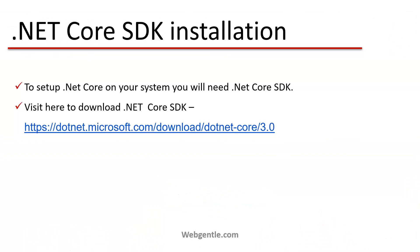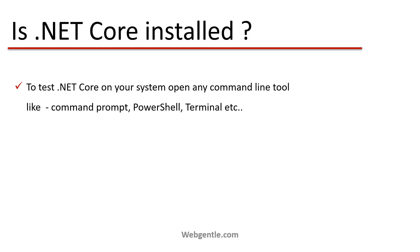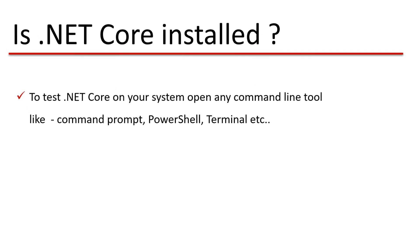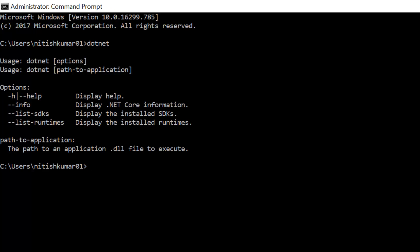To check whether .NET Core is installed, open any command line tool — command prompt, PowerShell, or terminal. I'm using command prompt on Windows. Simply type 'dotnet' and press Enter. If you see information about .NET Core, it means .NET Core is installed on your system.